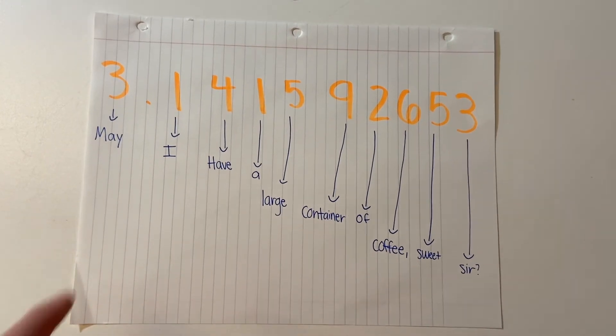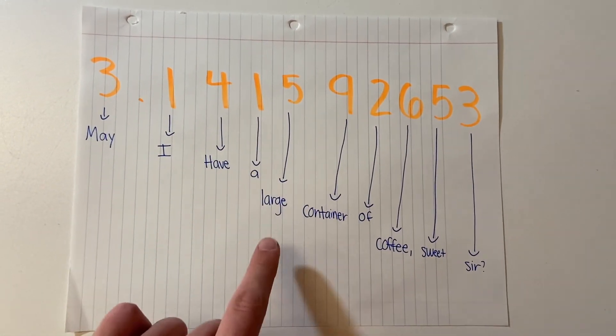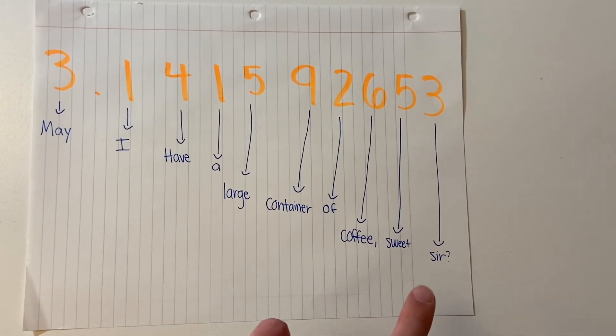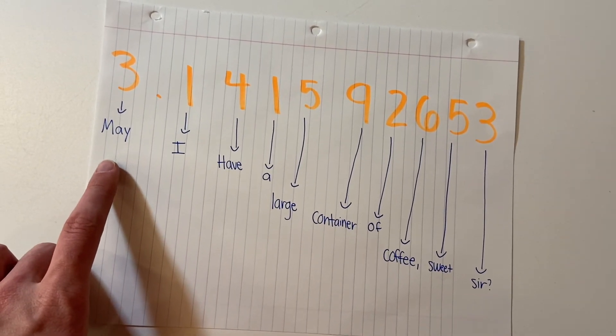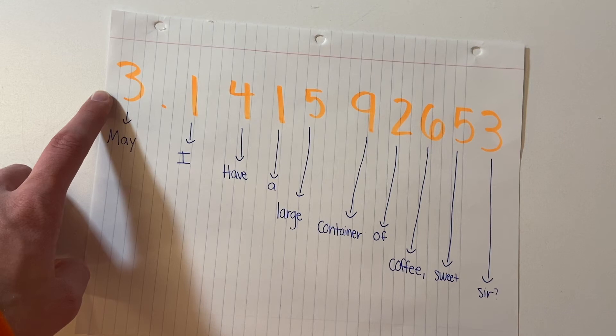Now I have a full sentence. May I have a large container of coffee, sweet sir? As you can see, every word has the same number of letters as the digit or the value of pi.